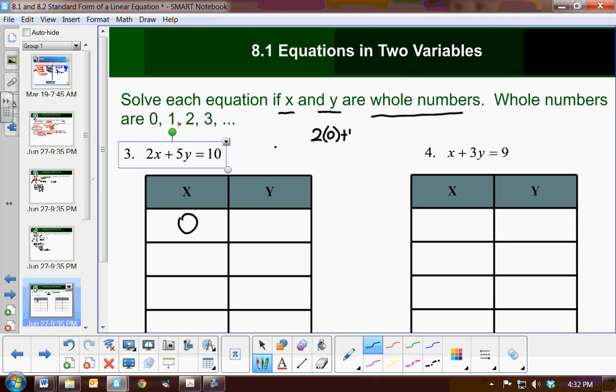So I'm going to show my work here. 2 times 0 plus 5y equals 10. We know 2 times 0 is 0, so 5y equals 10. So therefore, y would equal 2. So when x is 0, y is 2.